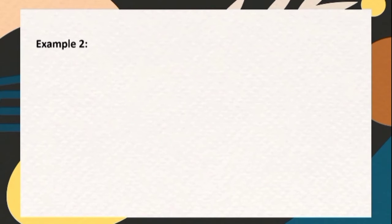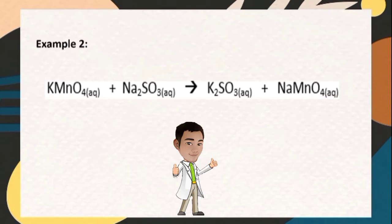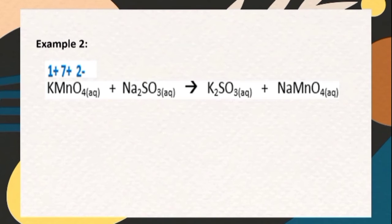Let's have the second example. The oxidation states of the following elements in the chemical reactions are as follows. For potassium permanganate, K is positive one, Mn is positive seven, and O is negative two. For sodium sulfate, Na is positive one, S is positive four, and O is negative two.